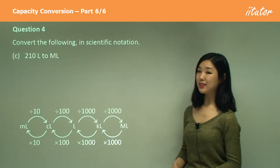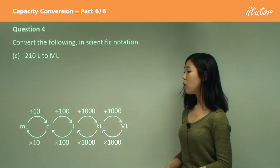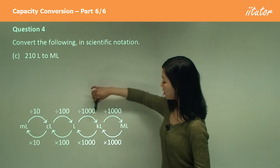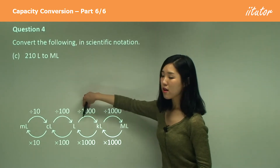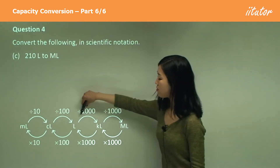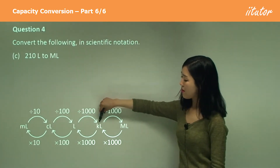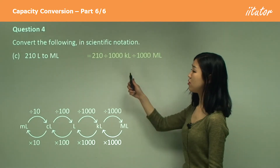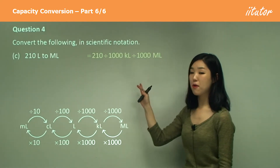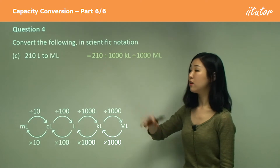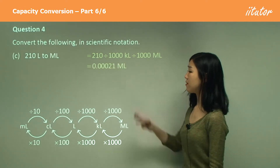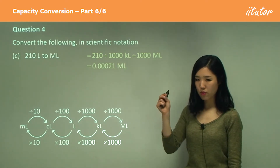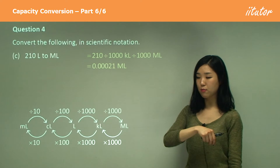Liters to megalitres — small to large — we divide, but this time we have to divide by a thousand and divide by a thousand again. So it's going to be 210 divided by a thousand and divided by a thousand again, which gives us something like this as a decimal. Make sure you become very careful when you're converting into decimals.